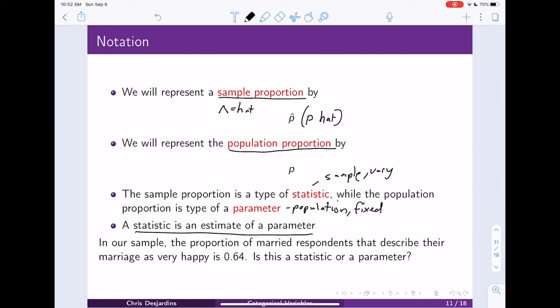So in our sample, we found that the proportion of married respondents that describe their marriage as very happy was 0.64. Is this a statistic, or is it a parameter? So I encourage you to think about that for a second. So it's going to be a statistic, right? Because it's calculated based on our sample of 922 participants or respondents. And we can write it formally as p hat equals 0.64. So that's how we would write it. And that's going to be our estimate of our population parameter.